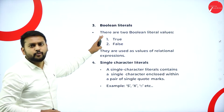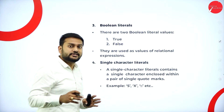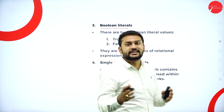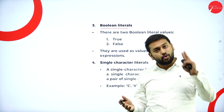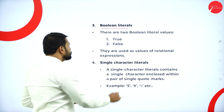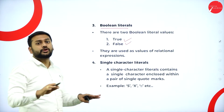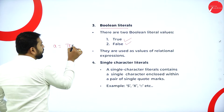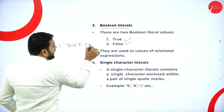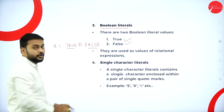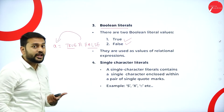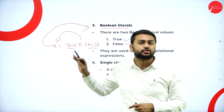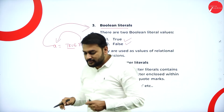Moving forward, boolean literals represent two values: true and false. I will be able to store only these two kinds of value — I will not be able to store any other value. If a variable stores only true or false, that variable should be of boolean type.